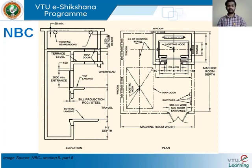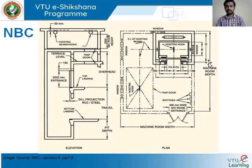Coming back to the NBC diagram: alphabets A and B give the width and depth of the lift car, while alphabets C and D give the sizing of the lift shaft. The lift car and lift shaft sizes are decided based on the capacity of the lift — meaning how many people it is designed for — which varies by building type: residential, apartment complex, commercial, or industrial.